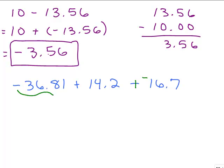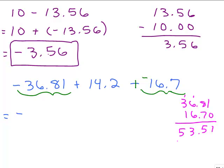All right, so now I notice I've got these two negative numbers that need to be added together and that will give me a negative number. So I'm going to go over on the side here and add the 36.81 to the 16.7. And that gives me negative 53.51. But I have to still add in the 14.2.